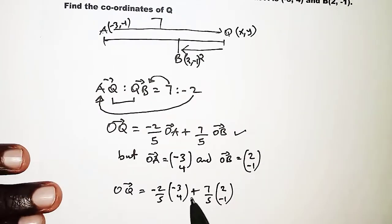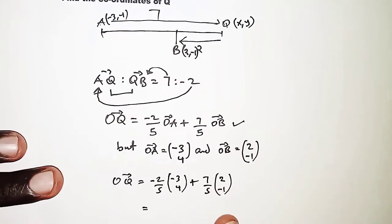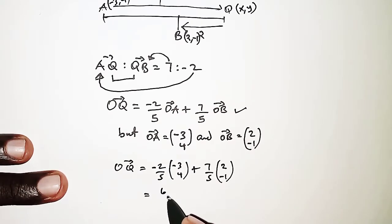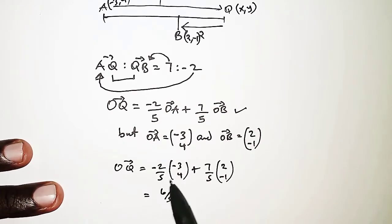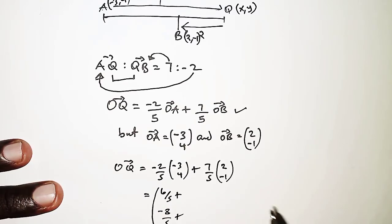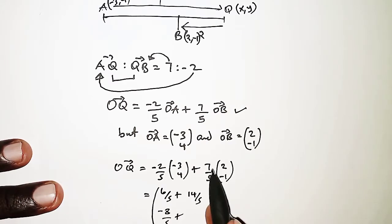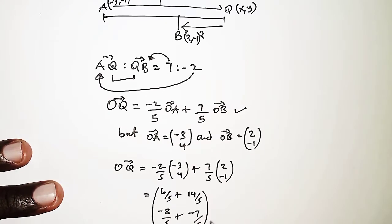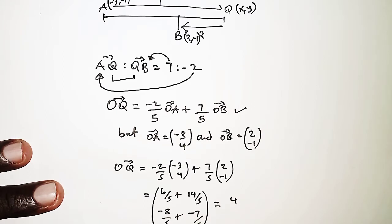Multiplying through, we have negative 2 over 5 times negative 3, which gives 6 over 5, and negative 2 over 5 times 4, which gives negative 8 over 5. Then 7 over 5 times 2 gives 14 over 5, and 7 over 5 times negative 1 gives negative 7 over 5. Adding: 6 over 5 plus 14 over 5 is 20 over 5, which equals 4. And negative 8 over 5 plus negative 7 over 5 is negative 15 over 5, which equals negative 3.